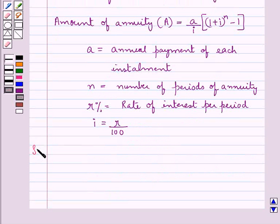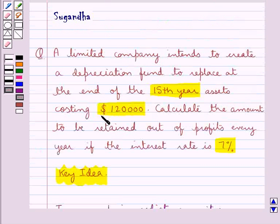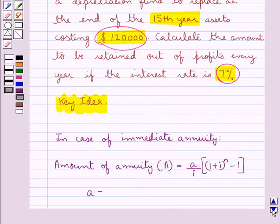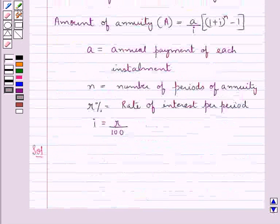Let us now proceed with the solution. Now the cost of the assets was $120,000. So this would be the amount of annuity in this case and it is also given that the rate of interest is 7% per annum. Now as you can see that in this case the payment is done at the end of the year, so this means it is the case of immediate annuity and so we will use this formula.